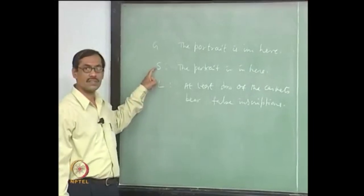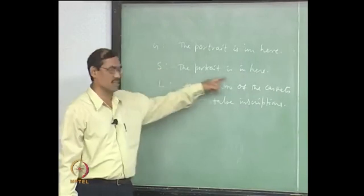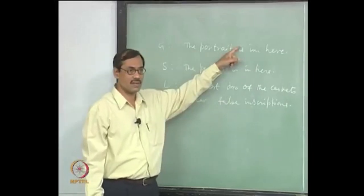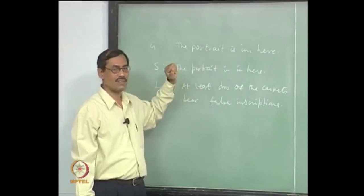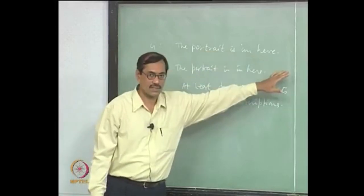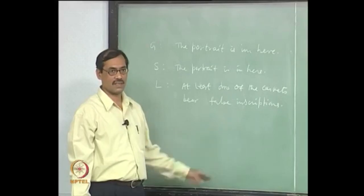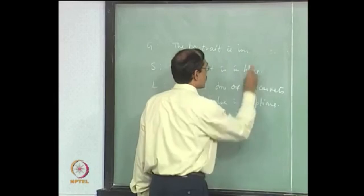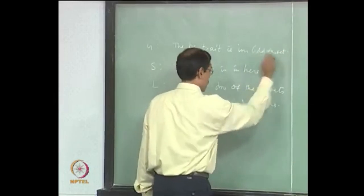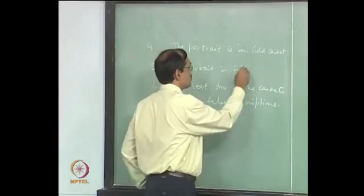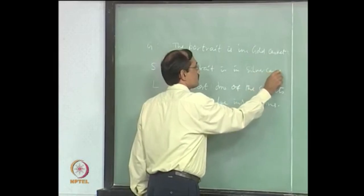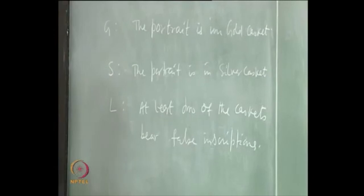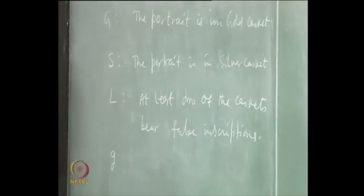Capital G is the inscription which is written on the gold casket. That means G will be the sentence 'the portrait is in here' itself, as it is written. Then, the same way I write capital S for the inscription written on the silver casket. When you say 'in here', it is really confusing. So you have to change the inscription this way when you interpret - we have to say that the portrait is in the gold casket, not only here. That is the inscription; that is the way we have to read G. So G becomes: the portrait is in the gold casket. Similarly, S stands for 'the portrait is in the silver casket.' Capital L stands for the inscription on the lead casket, which is this itself. Let us introduce some more propositional variables.